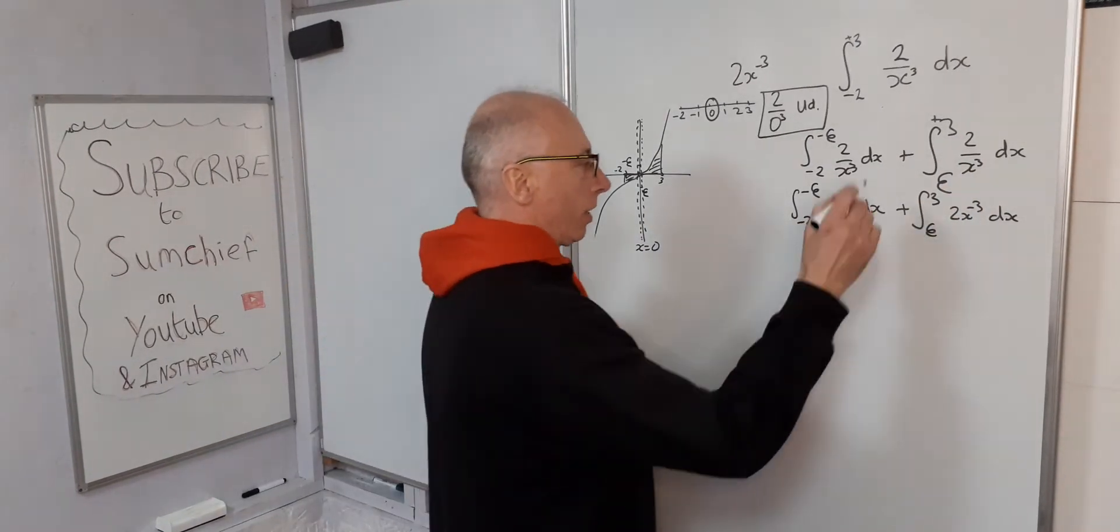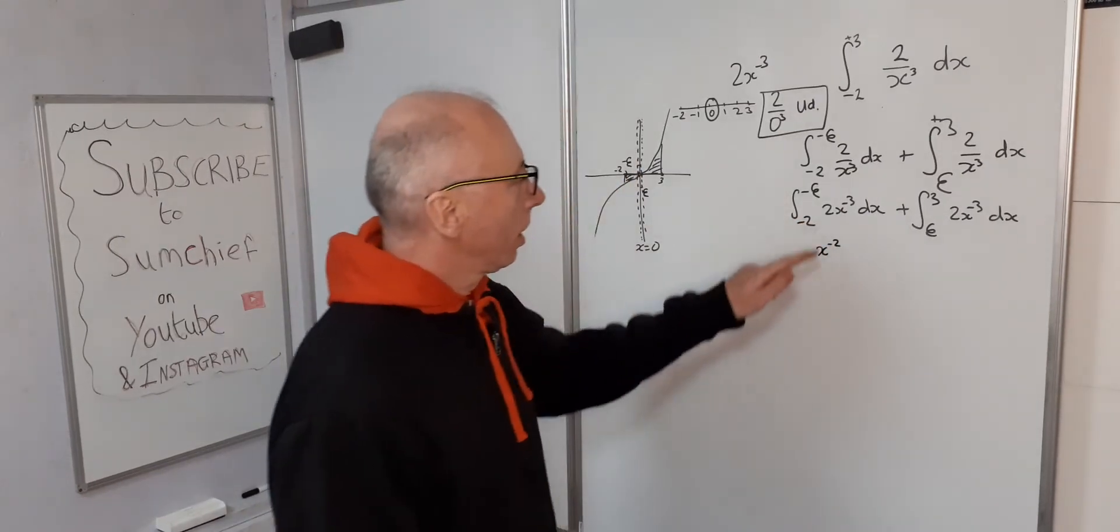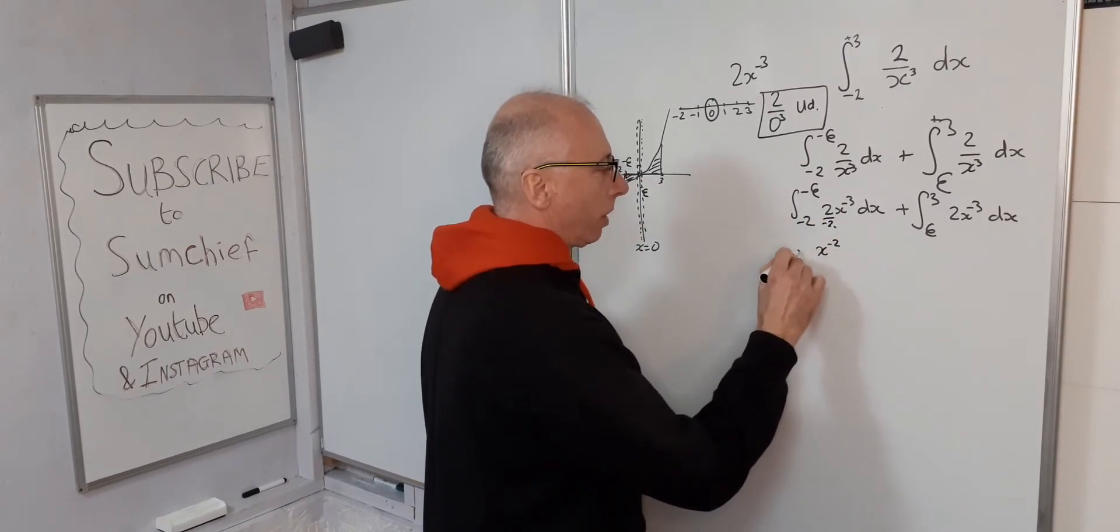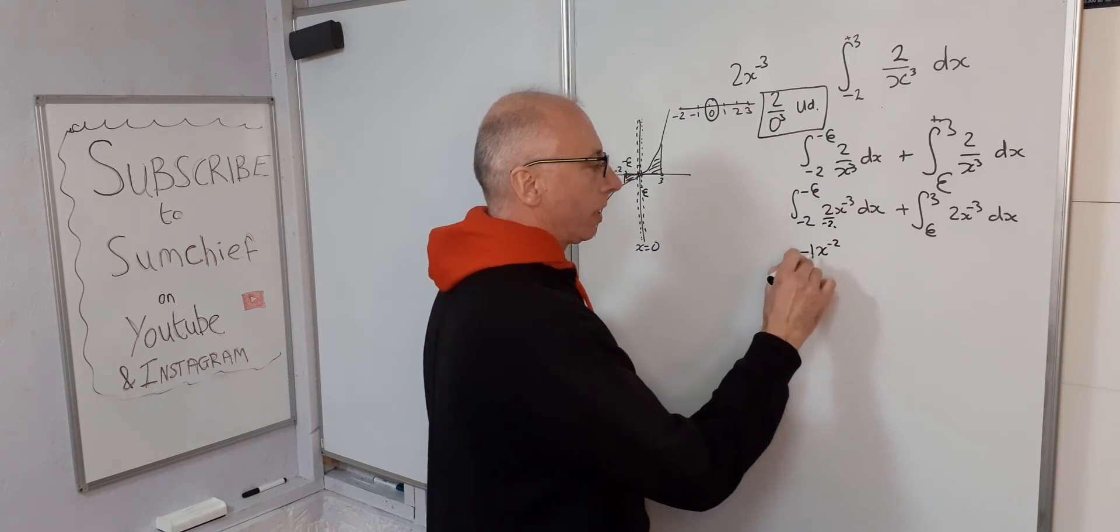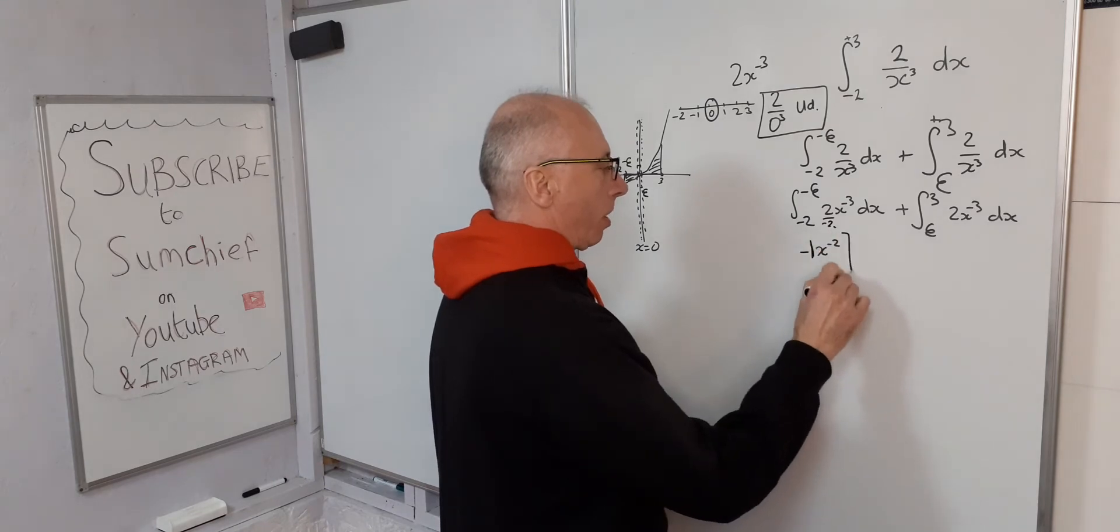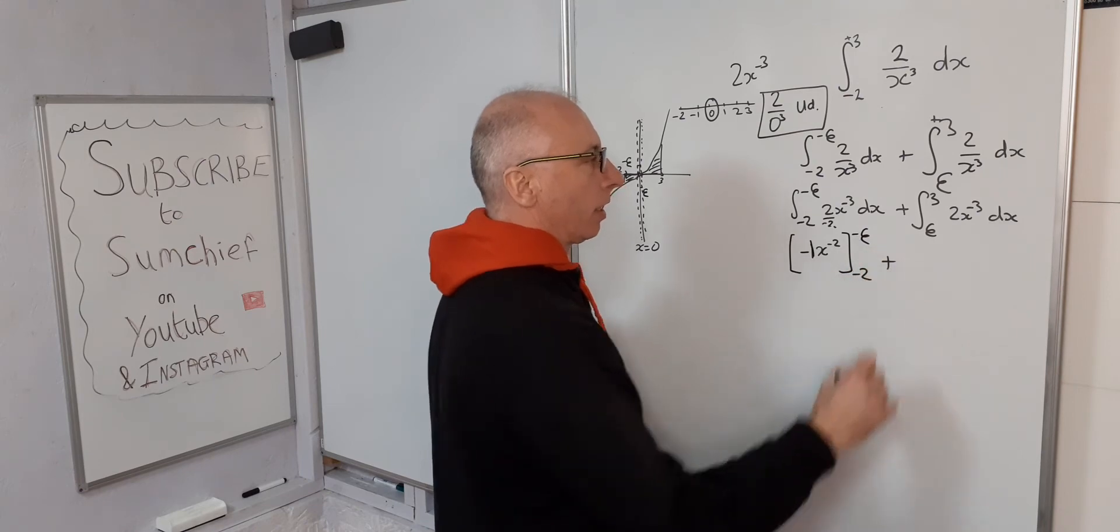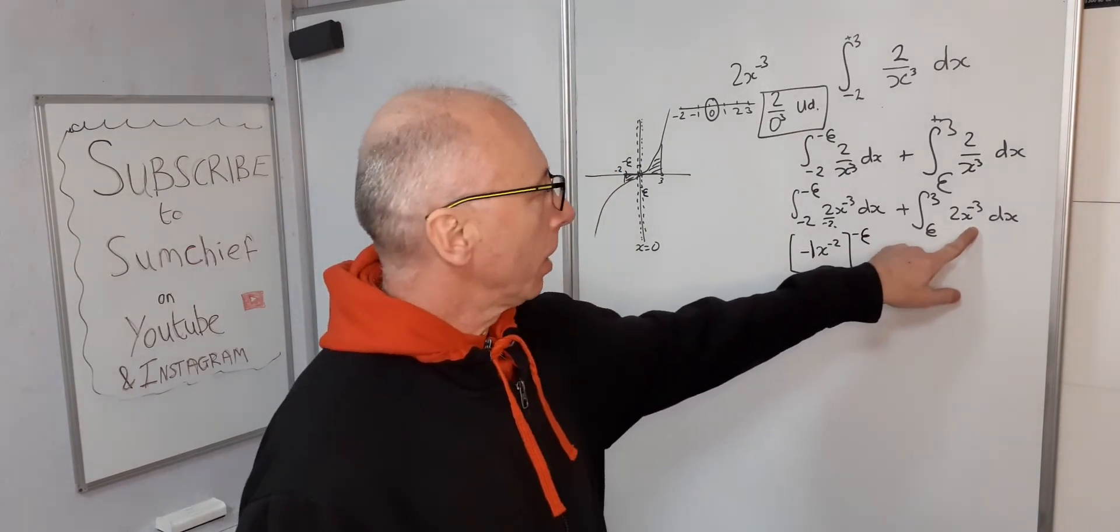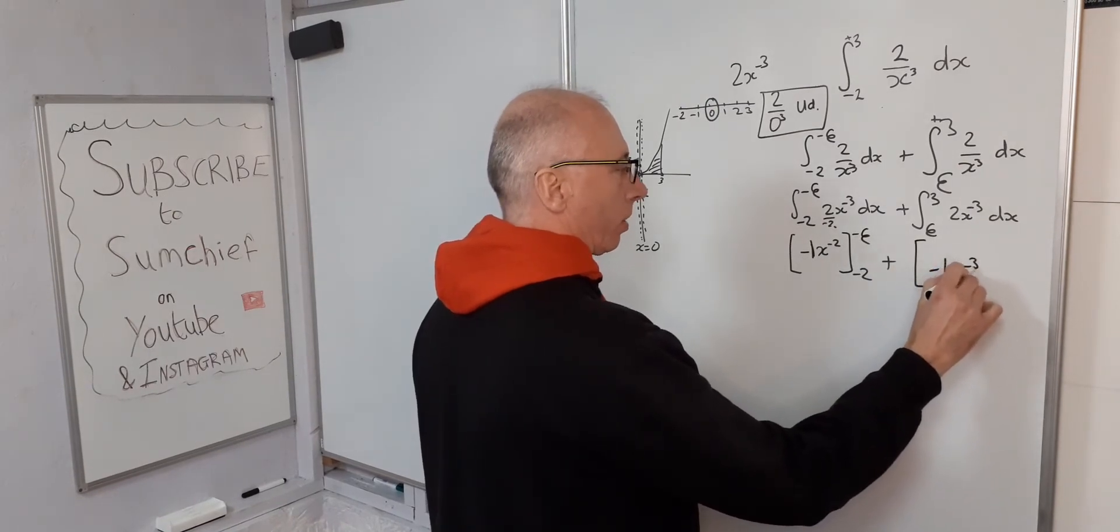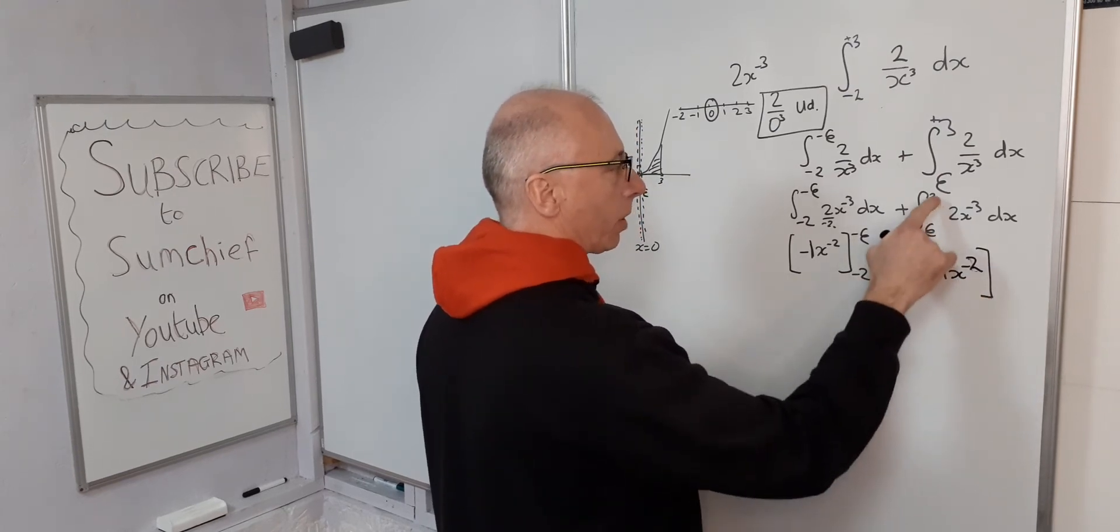Okay, so now we go straight into integration. So integrate 2x to the minus 3, we get x to the minus 2, divide by the new power which is minus 2. So we end up with negative 1 x to the minus 2. And that's from negative epsilon to negative 2, and then we add. So we now know what the integral of 2x to the minus 3 is: negative 1 x to the minus 2, and again this time epsilon to 3.